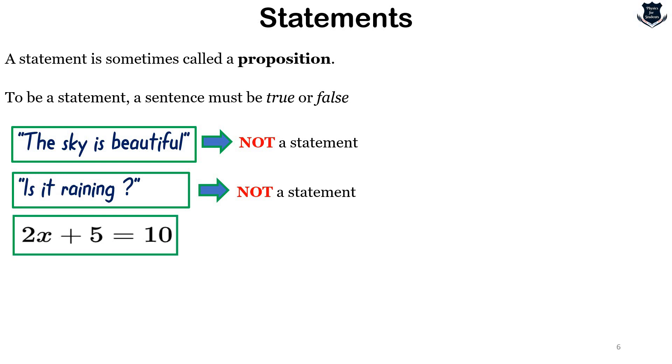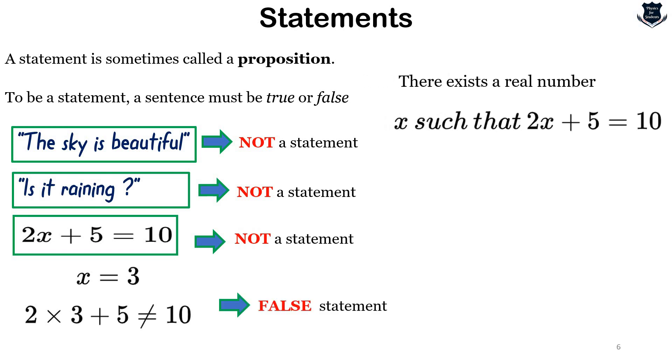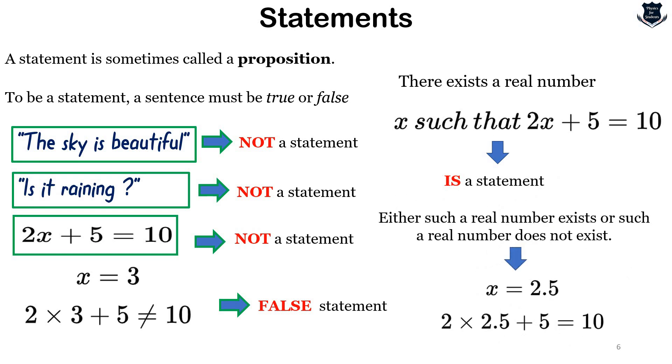Some sentences that are mathematical in nature are often not statements because we may not know precisely what a variable represents. For example, the equation 2x + 5 = 10 is not a statement since we do not know what x represents. But if we substitute a specific value of x, such as x = 3, then the resulting equation becomes false. However, 'there exists a real number x such that 2x + 5 = 10' is a statement because either such a real number exists or it does not. If we take x = 2.5, then we get 10 = 10, so this is a statement.